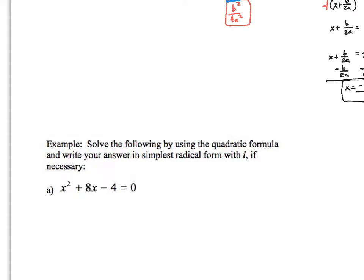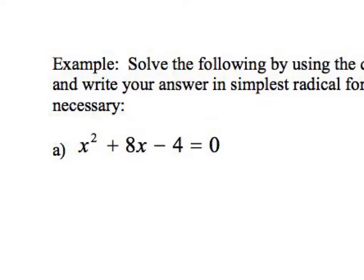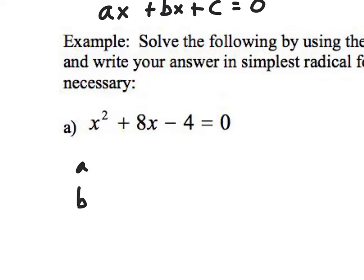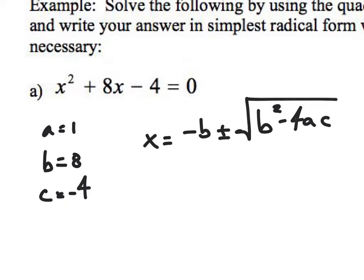What I want to do is solve these using the quadratic formula — it should be a little bit easier. All of these are of the form ax squared plus bx plus c is equal to 0. So I want to identify my a value, my b value, and my c value. My a value is 1, my b value is 8, my c value is negative 4. Now I want to plug these numbers into x equals negative b plus or minus the square root of b squared minus 4ac all over 2a, and that will give us our answers for x.